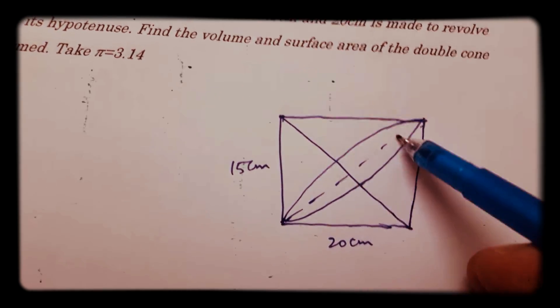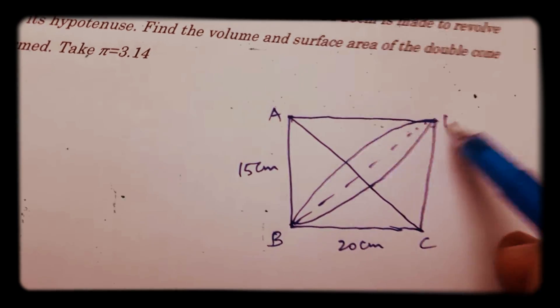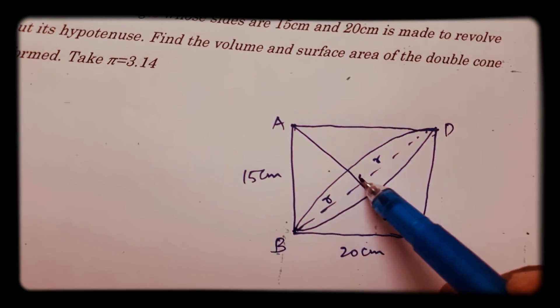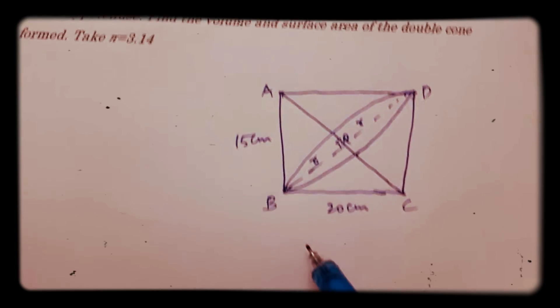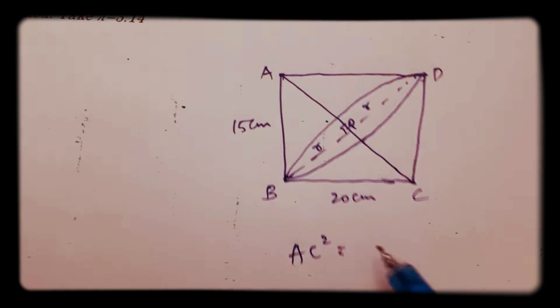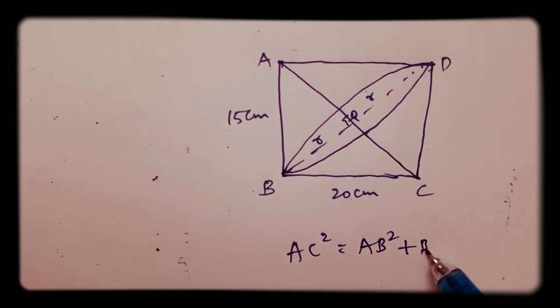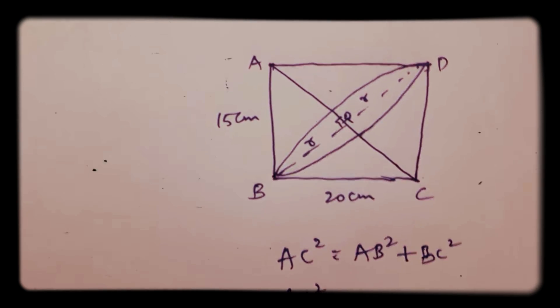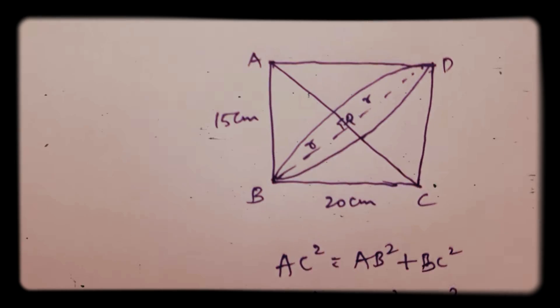Name it as A, B, C, and D and mark the radius as O perpendicular. Now first apply Pythagoras theorem: AC square equals AB square plus BC square. AC square equals AB is 15 square plus 20 square, so AC is 25.